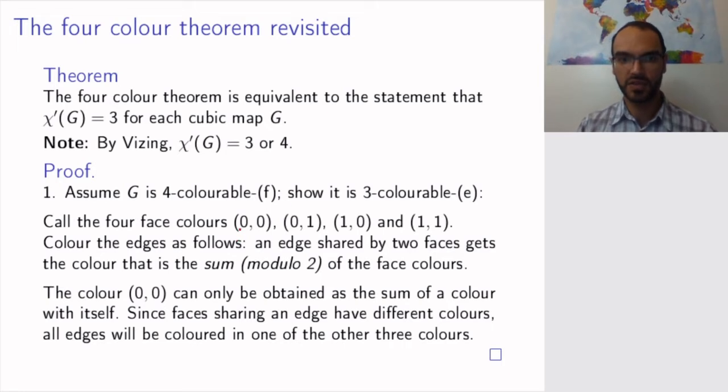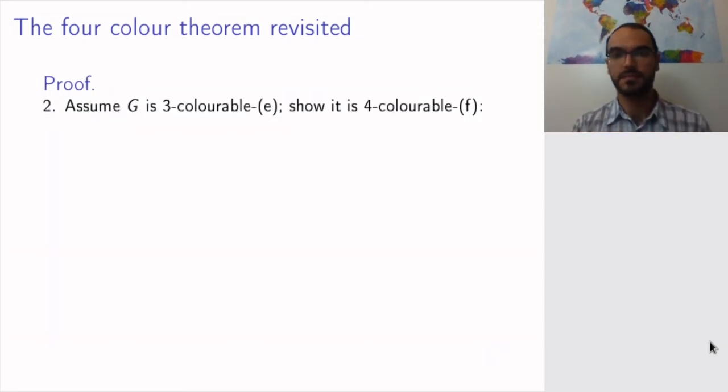So, this color will not arise as an edge color, and all edges will, in fact, be colored using (0,1), (1,0), and (1,1). So, this shows that if I start with a 4-face colorable cubic map, I can show that it's 3-edge colorable.